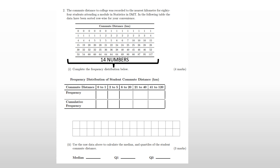For zero to one, I cross off the first row and know that's 14 numbers. Then I continue counting the remaining ones: 15, 16, 17, 18, 19 — so I put 19 in the box. I do the same for two to five, crossing off every number in that range and counting, usually twice, to make sure I didn't misplace anything. This question is easy to get full marks on, but also easy to lose marks if you miscount, since errors cascade through the whole table.